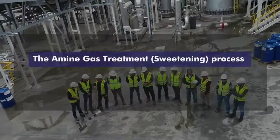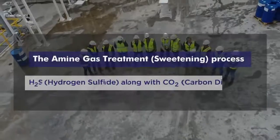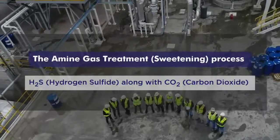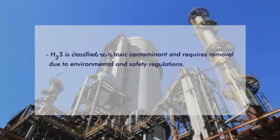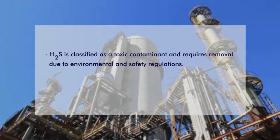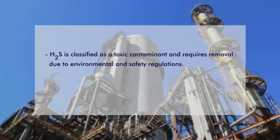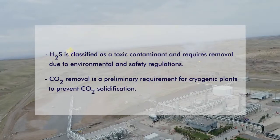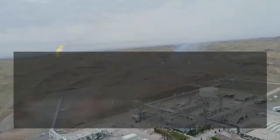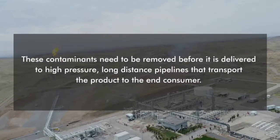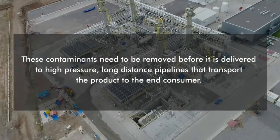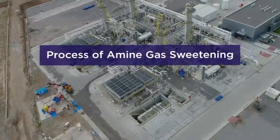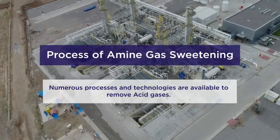The amine gas treatment sweetening process involves the removal of hydrogen sulfide and carbon dioxide from natural gas. Hydrogen sulfide is classified as a toxic contaminant and requires removal due to environmental and safety regulations. Carbon dioxide removal is required for cryogenic plants to prevent solidification. These contaminants need to be removed before gas is delivered to high-pressure, long-distance pipelines that transport the product to the end consumer.